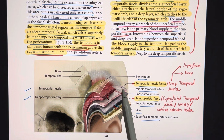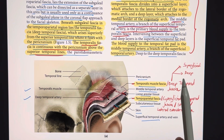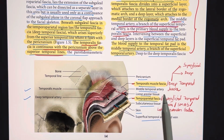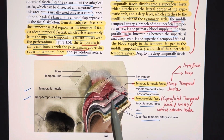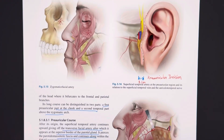Next comes the loose areolar tissue, and below it lies the temporalis muscle fascia. This is also known as the deep temporal fascia, which is divided into two layers — superficial and deep. Within this temporalis muscle fascia lies the middle temporal artery. Below it lies the temporalis muscle, which has the deep temporal arteries, and lastly lies the pericranium.